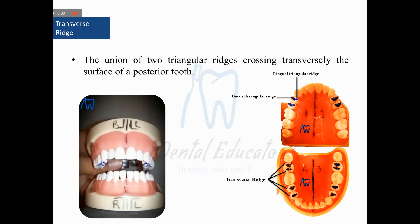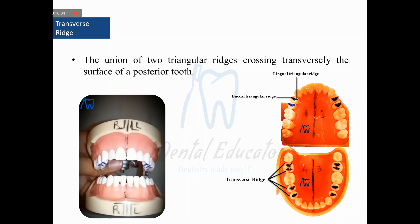A transverse ridge is formed when two triangular ridges fuse or join together. When the buccal and lingual triangular ridges are joined together, it is referred to as the transverse ridge. It appears as a continuous line across the occlusal surface rather than two separate ridges. For example, the lingual triangular ridge and the buccal triangular ridge on the buccal cusp, when joined together, form what is called the transverse ridge.